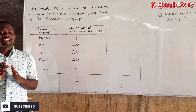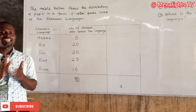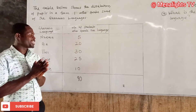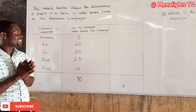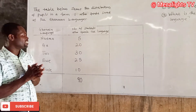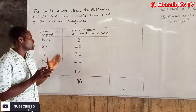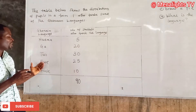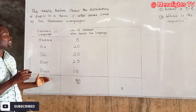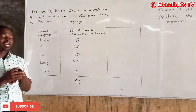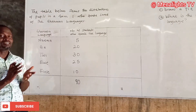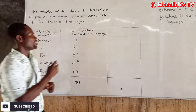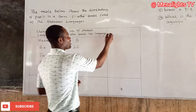A pie chart is a circular diagram and the sum of angles in a pie chart is 360 degrees. So we are going to share those 360 degrees among the people who speak Nzima, Ga, Twi, Ewe, and Fanti. Let's see how to go about it.